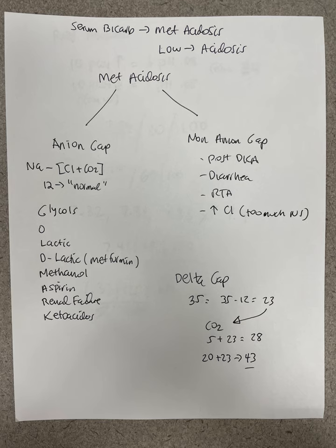The causes of anion gap metabolic acidosis — we used to use the acronym MUD PILES, now it's GOLD MARK. G is for glycol — ethylene glycol, polyethylene glycol.